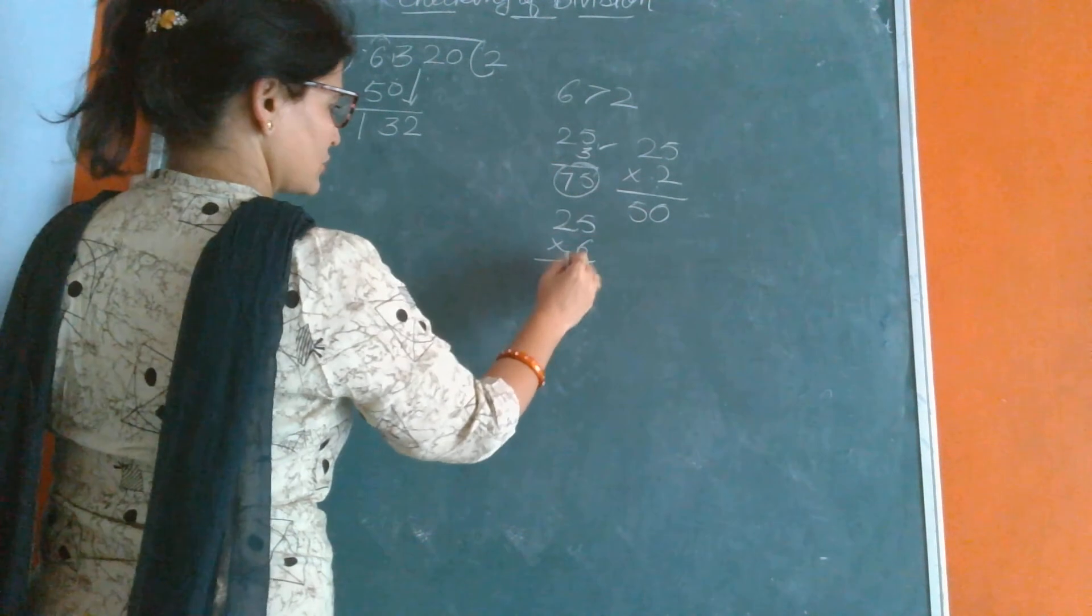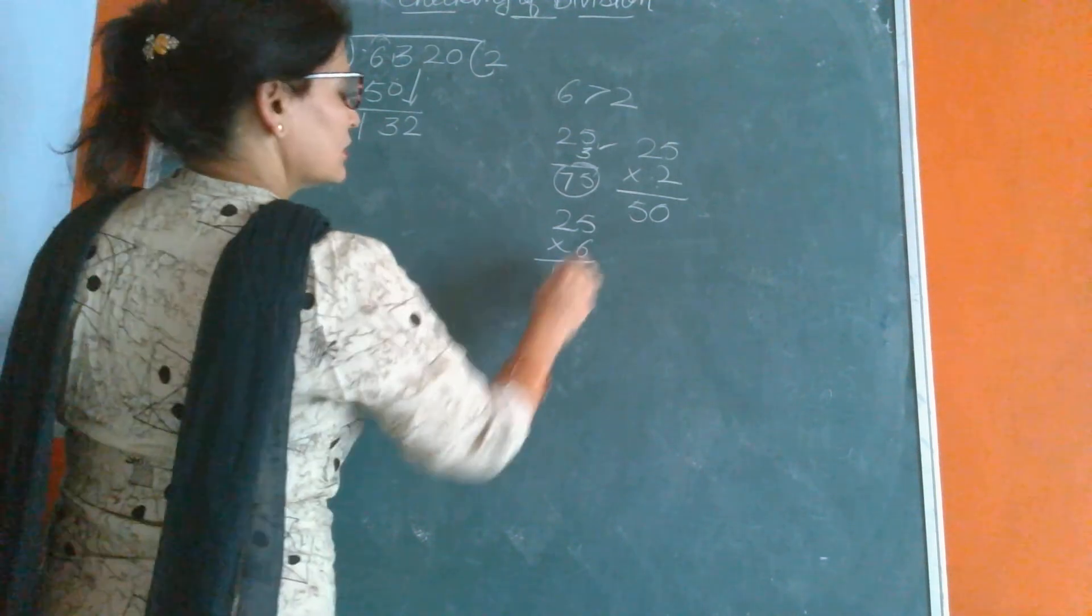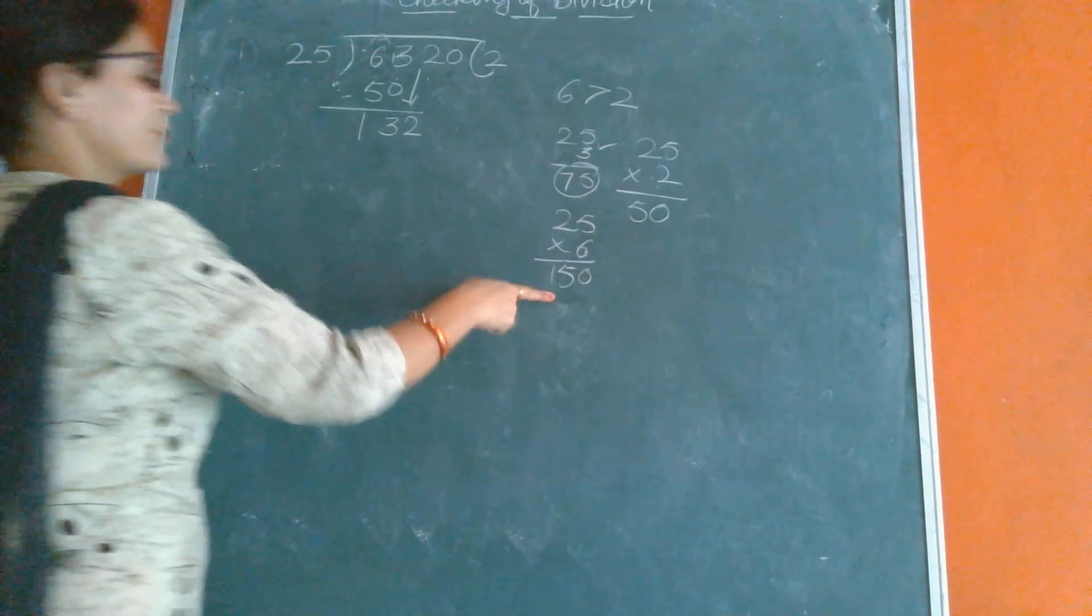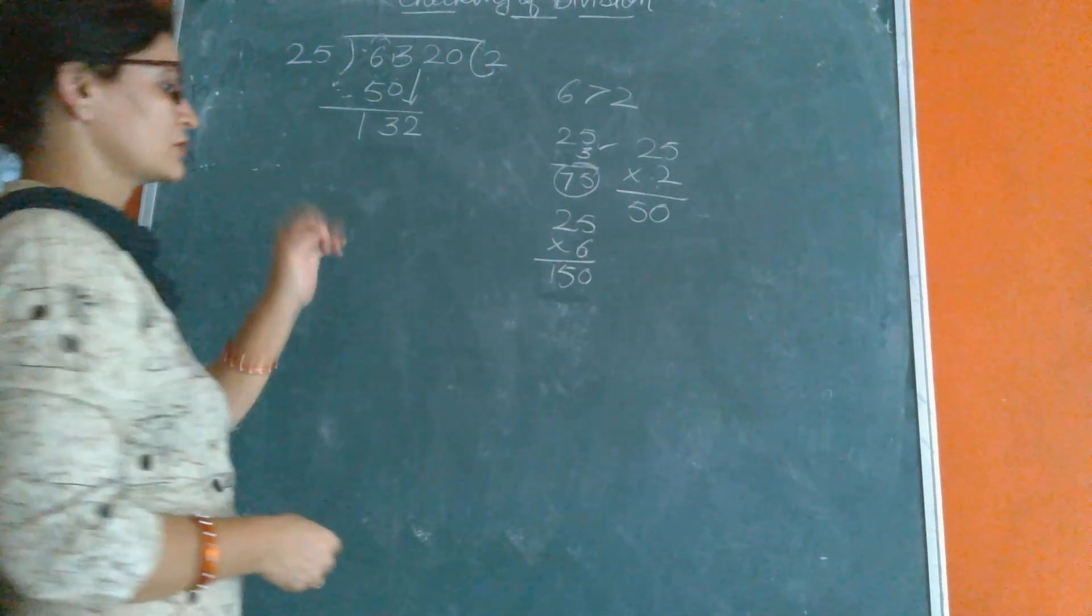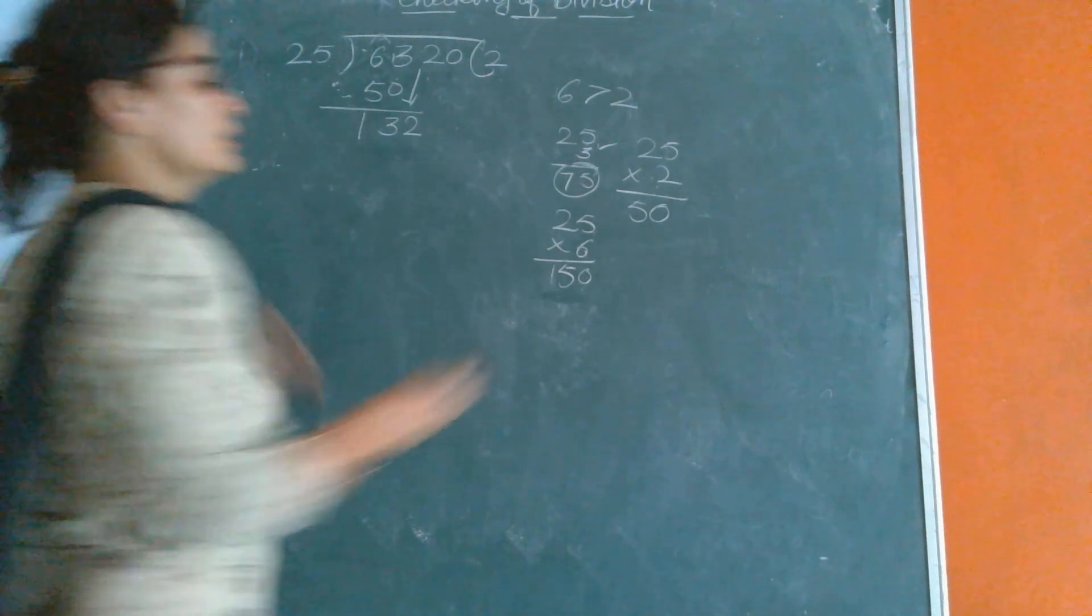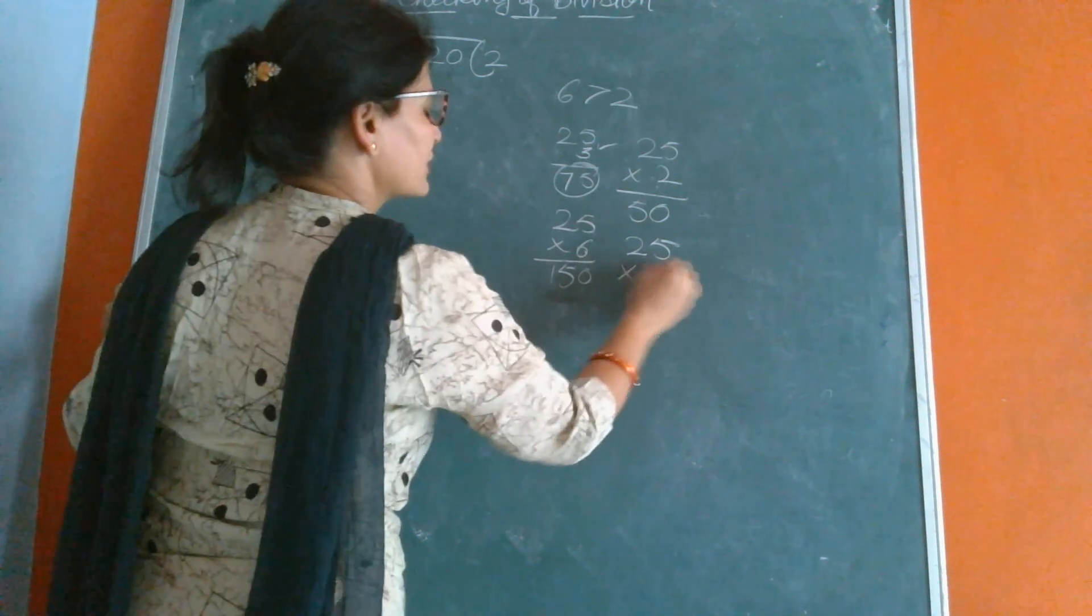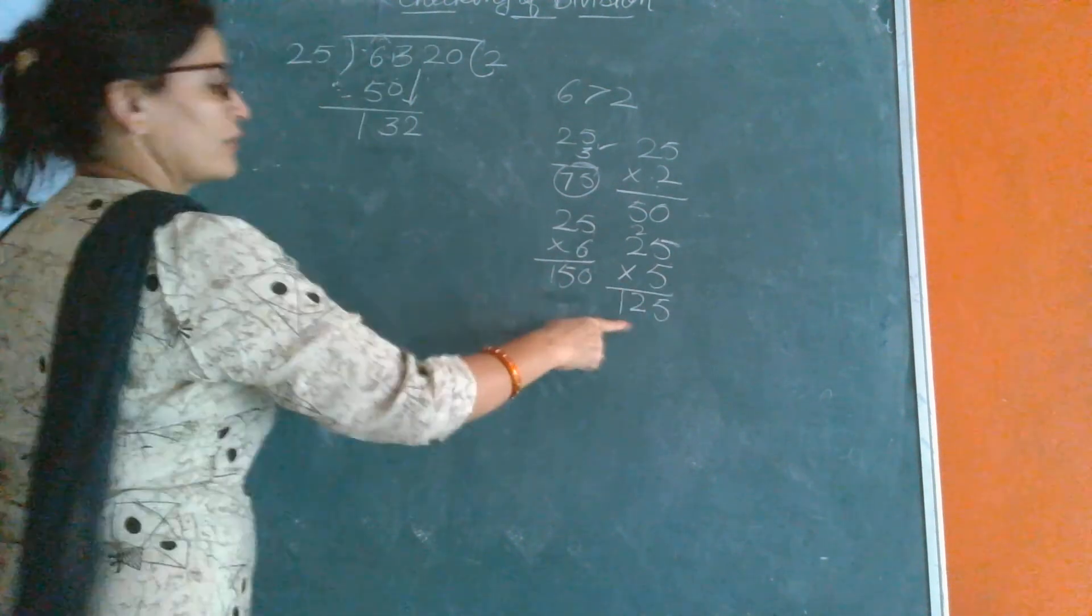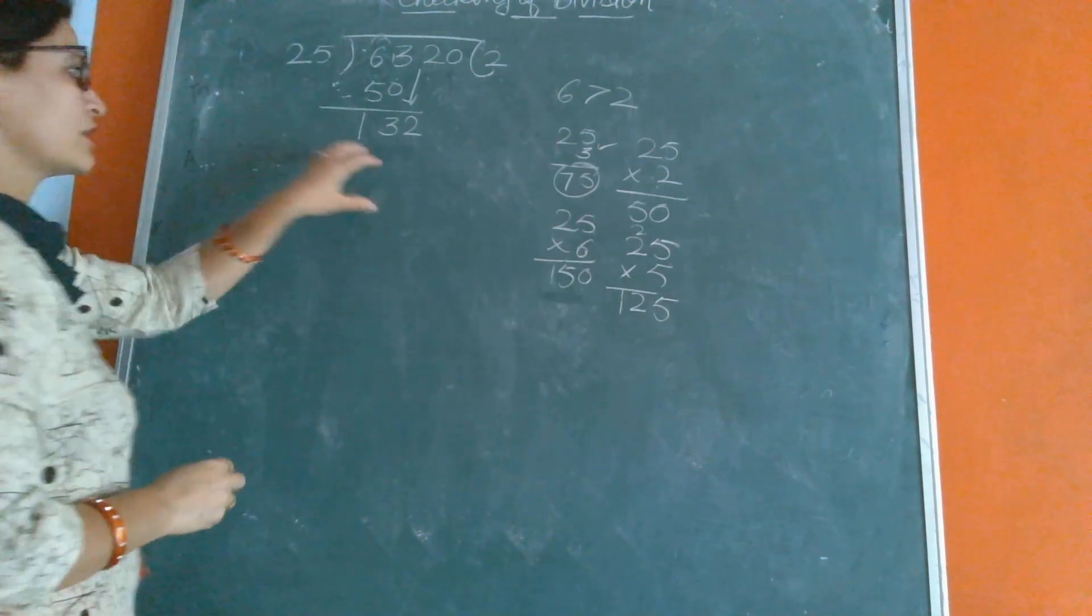6 times 5 is 30, write 0 carry 3. 6 times 2 is 12 plus 3 is 15, so 150. There is 150 and there is 132. 150 is greater than 132, so we can't subtract 150 from 132. Now we will take the upper number. What is the upper number of 6? It's 5. Now we will multiply: 5 times 5 is 25, 5 times 2 is 10 plus 2 is 12, which gives us 125. 125 is less than 132.